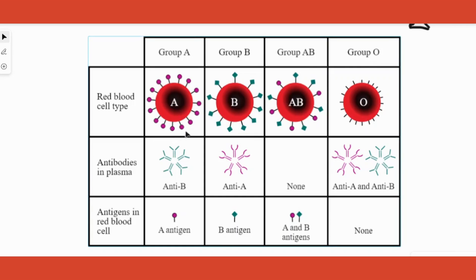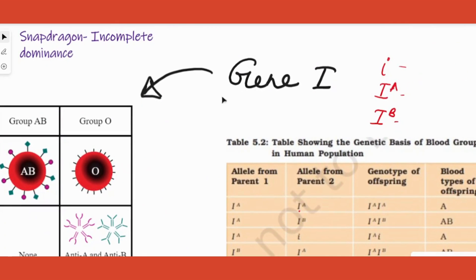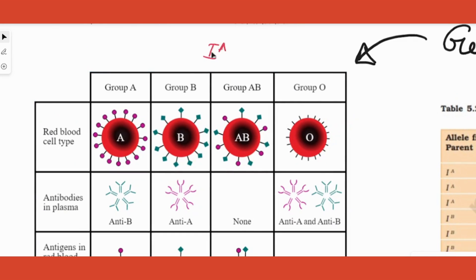Now, as you know, any antigen, protein, sugar polymer, or enzyme - all are coded by a particular gene. In this case, the name of the gene is gene I, which has three alternate forms. When I say three alternate forms, I hope you can follow that if I have this as the allele, this as the allele, then my surface antigen will be A.